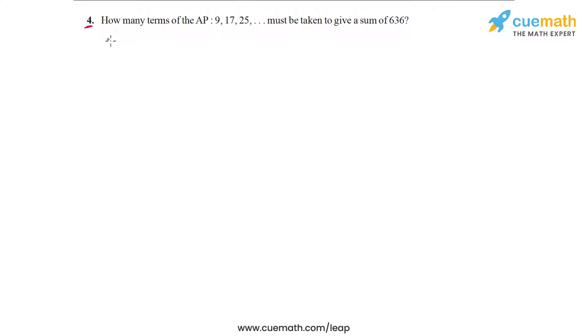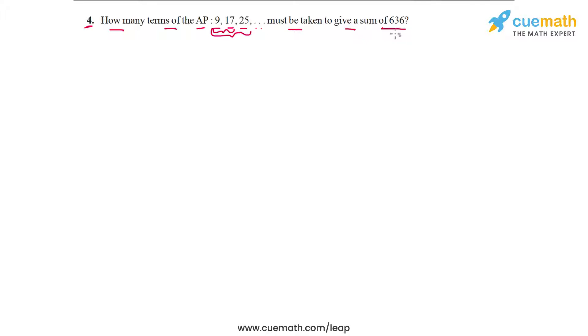The problem statement in question 4 of this exercise is: how many terms of the AP 9, 17, 25 and so on must be taken to give a sum of 636? As we take more terms of this AP the sum will increase. For example, the sum of the first two terms will be 9 plus 17 which is 26, and so on. The question asks us to find how many terms we should take so that the sum becomes 636.